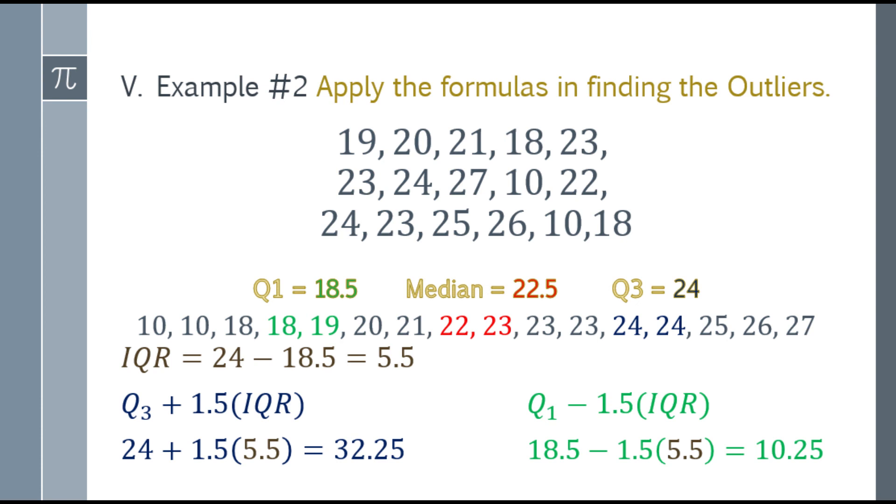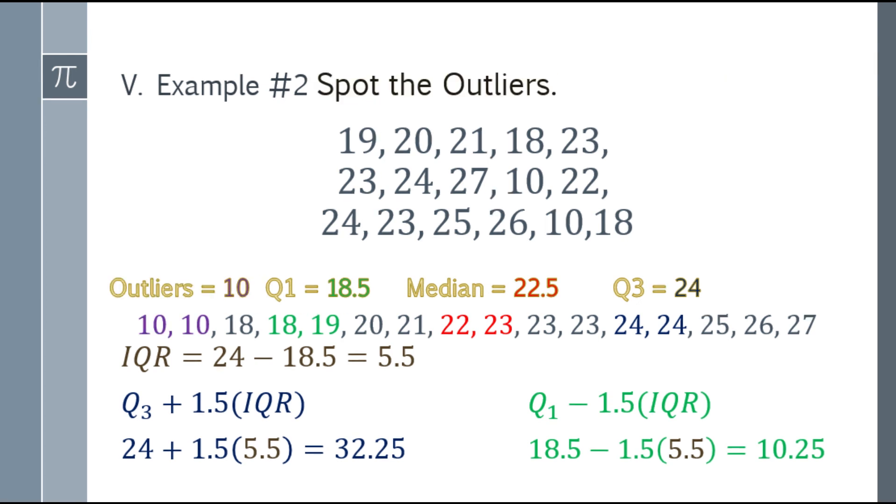Tinanatin yung mga data natin. Ano yung mga outliers? Walang mas mataas sa 32.25 na number sa data natin. Okay tayo dun sa 27, hindi siya outlier. Kaso dito, 10.25, hindi umabot yung 10. Yung dalawang 10 mo na yan, yan yung mga outliers.